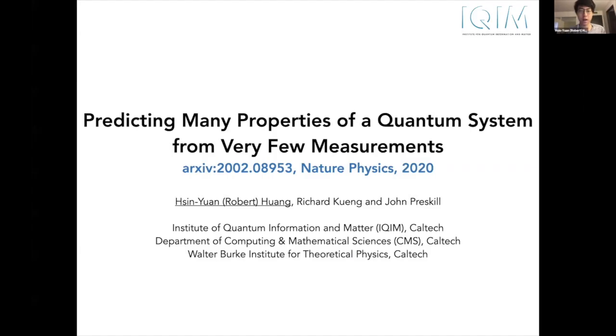I'm Robert Huang and this is joint work with Richard Kuhn and John Presco on predicting many properties of a quantum system from very few measurements. The archive link is here and it's just recently published in Nature Physics, actually just yesterday.